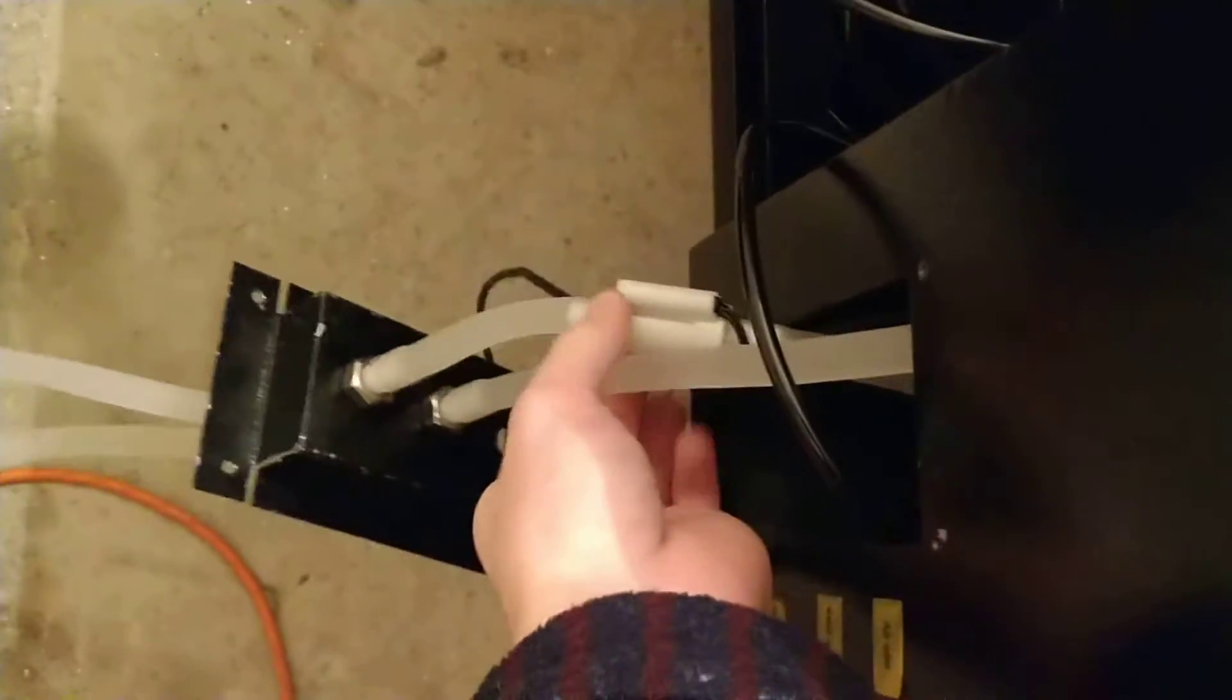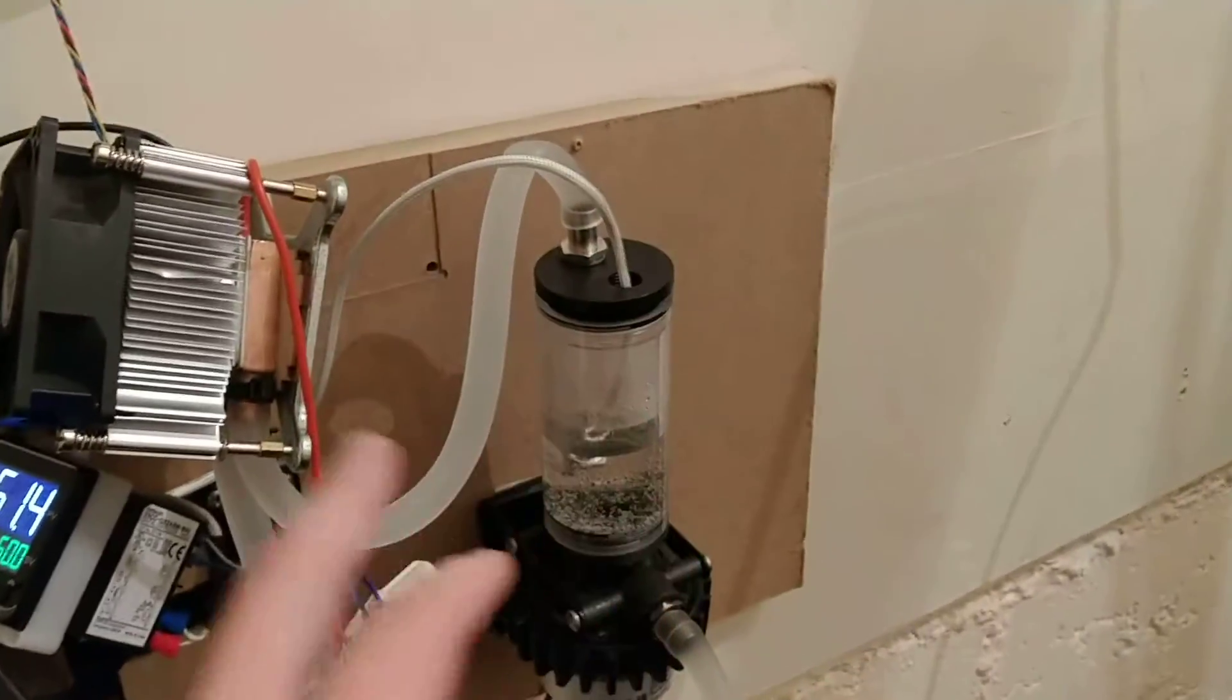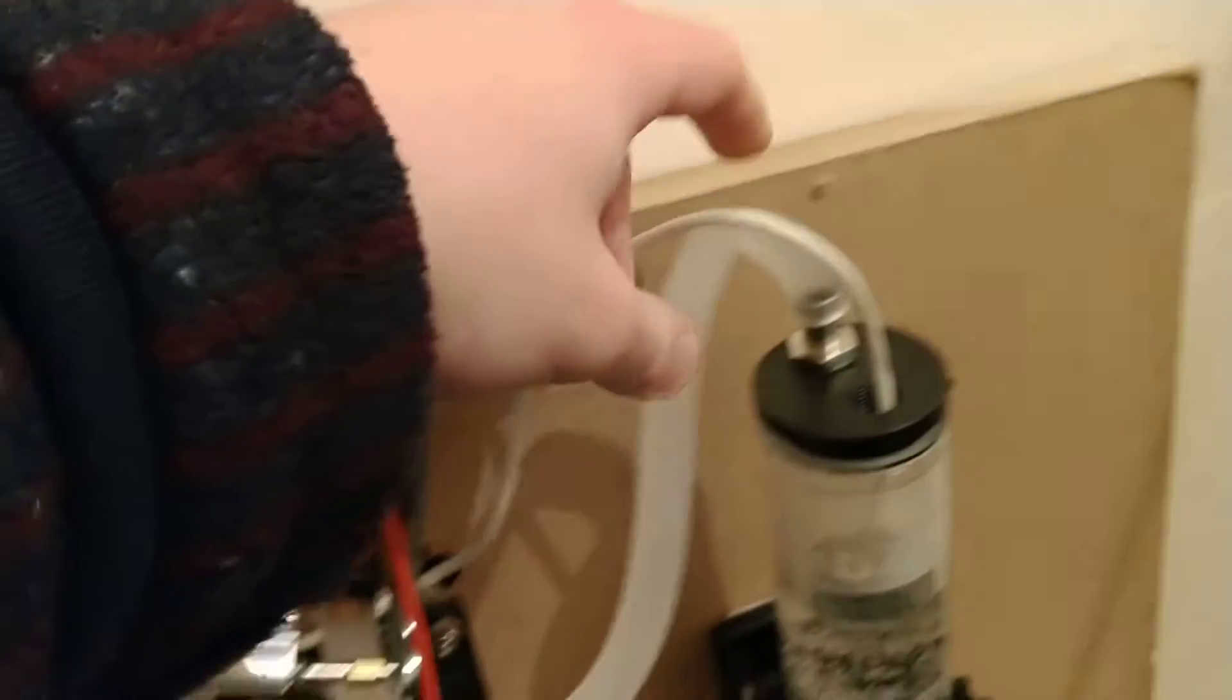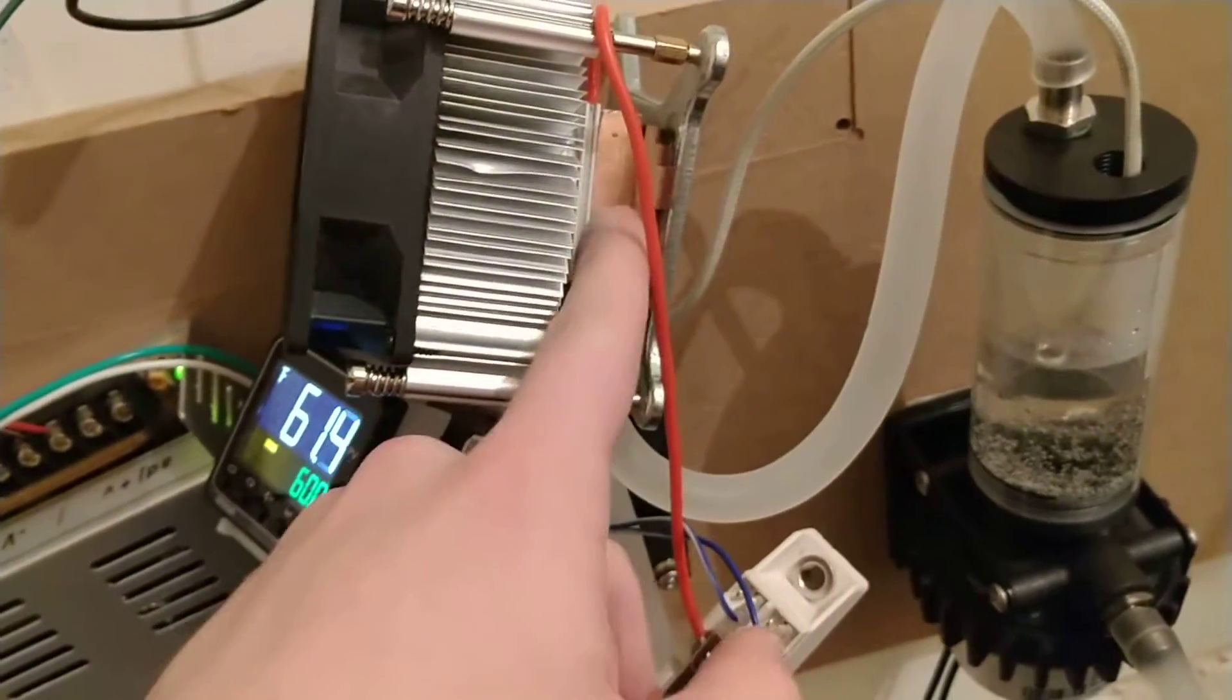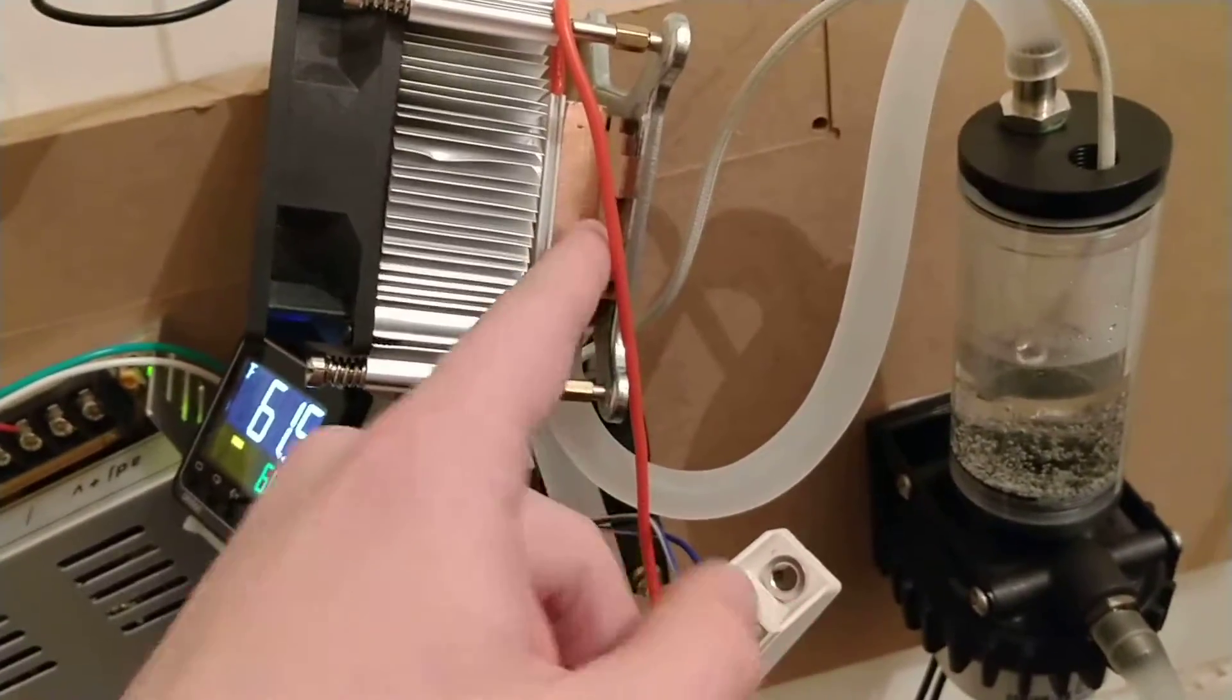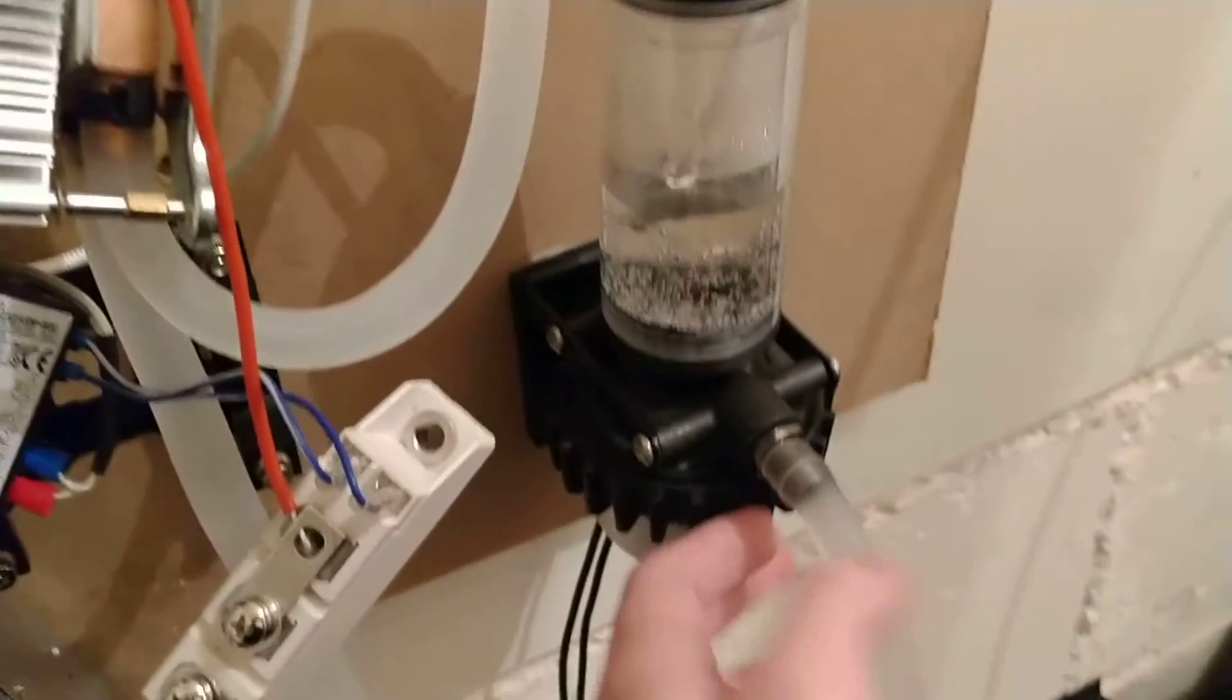This is the water flow sensor right here, and I believe what's happening is there's a lot of restriction in the water cooling loop. There's a kink right here, and I have the cold block—a cold plate right here—which is causing additional restriction. This is rated at no restriction 1500 liters per hour.